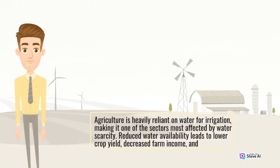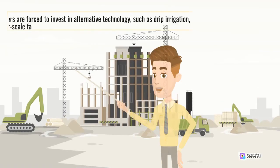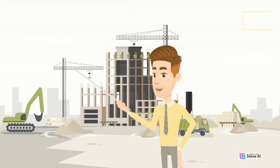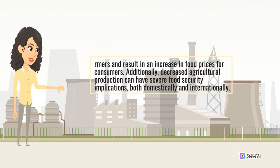Agriculture is heavily reliant on water for irrigation, making it one of the sectors most affected by water scarcity. Reduced water availability leads to lower crop yields, decreased farm income, and higher production costs. Farmers are forced to invest in alternative technologies, such as drip irrigation, to optimize water usage. These investments can be financially burdensome for smaller-scale farmers and result in an increase in food prices for consumers. Additionally, decreased agricultural production can have severe food security implications, both domestically and internationally.